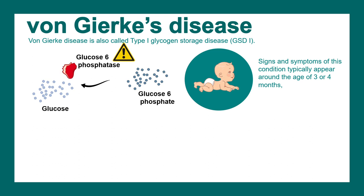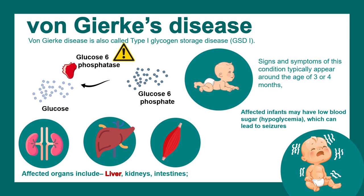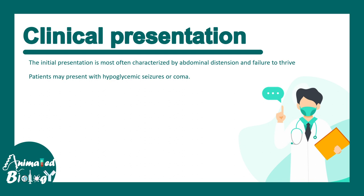The signs and symptoms of this disease appear at around 3 to 4 months of age and generally affect the kidney, the liver, and the intestines. Overall, hypoglycemia and seizures can be observed in these babies. The clinical presentation is defined by abdominal distension, and patients can very often face hypoglycemic seizures or coma, global muscle weakness, and dystonia in the muscle.